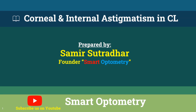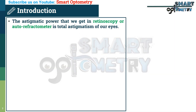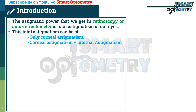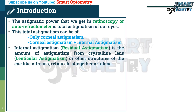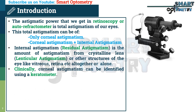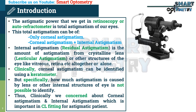Today I will discuss corneal astigmatism and internal astigmatism in contact lens practice. The astigmatic power we get in retinoscopy or autorefractometer is total astigmatism of the eye. This total astigmatism can be only corneal astigmatism or a combination of corneal and internal astigmatism. Internal astigmatism, also known as residual astigmatism, is the astigmatism from the crystalline lens — lenticular astigmatism — or other structures of the eye like the vitreous, retina, etc. Clinically, corneal astigmatism can be identified using a keratometer, but how much astigmatism is caused by the lens or other internal structures is not possible to identify. Thus, clinically we are concerned about corneal astigmatism and internal astigmatism, which is important in contact lens fitting for astigmatic patients.